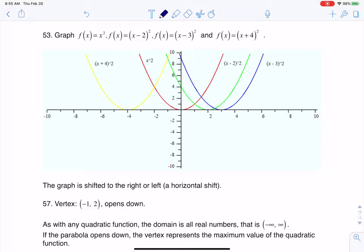So here's my parent function, x squared, and then you can see I have an x minus 2, an x minus 3, and an x plus 4. So the question's asking us, what does this subtraction of 2, subtraction of 3, and addition of 4 do to our parabolas?